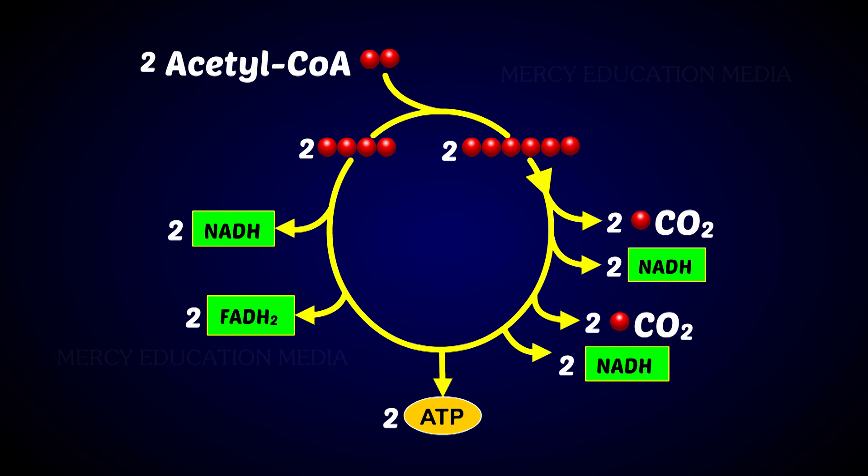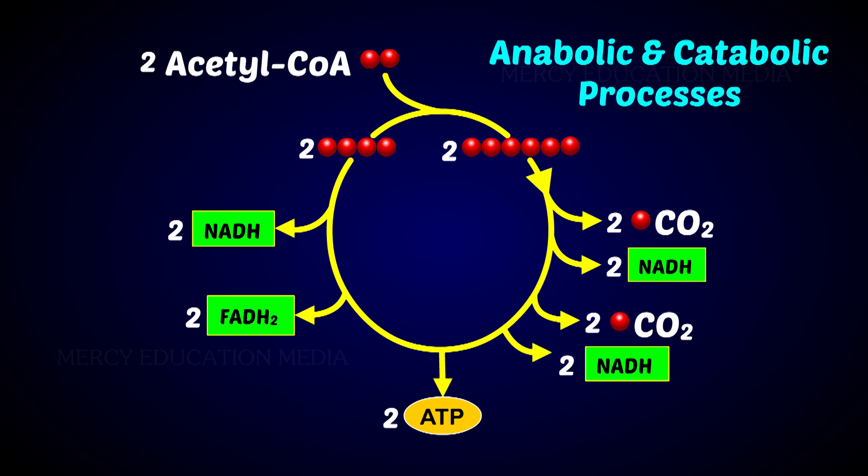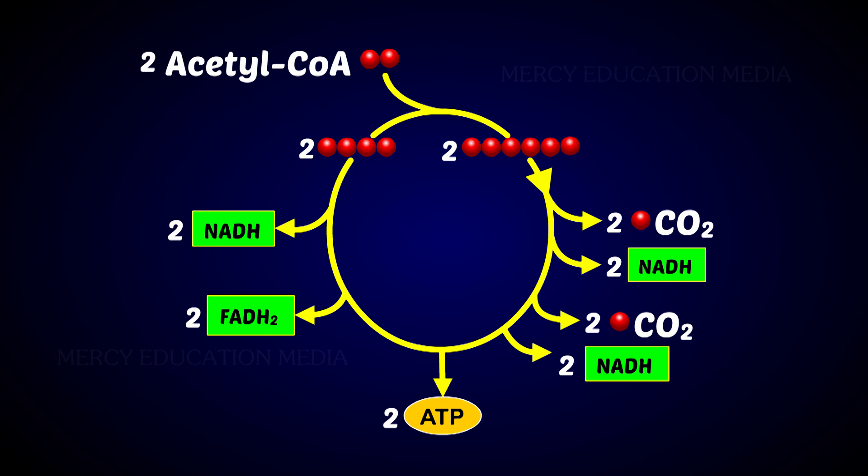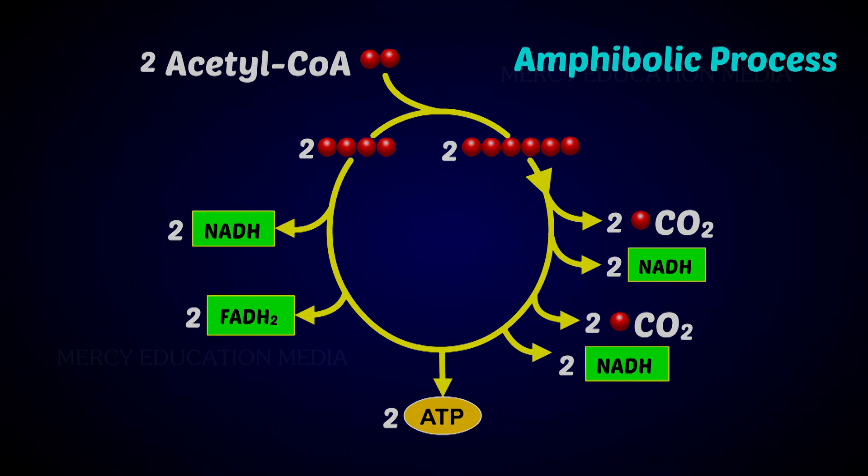Primarily, the Krebs cycle is an energy producing system. It involves both anabolic and catabolic processes, and is therefore also described as an amphibolic process.